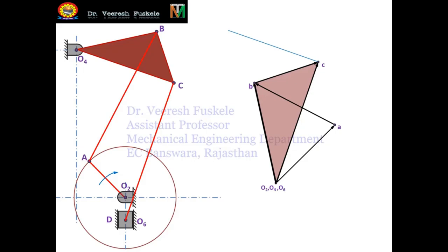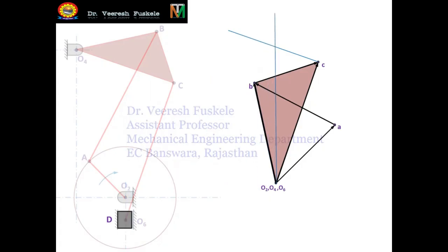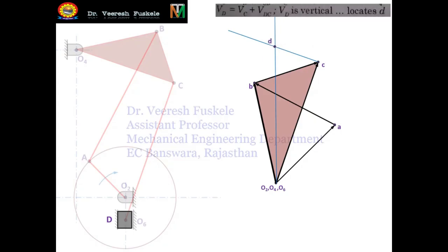The slider D always moves within its guides in the vertical direction. So we draw the velocity of slider D (link O6D) from point O6 in the velocity diagram in the vertical direction. The intersection of the slider velocity and the velocity vector of link CD gives us point D. The sense of the velocity of point D follows relative velocity: velocity of D equals velocity of C plus velocity of DC.